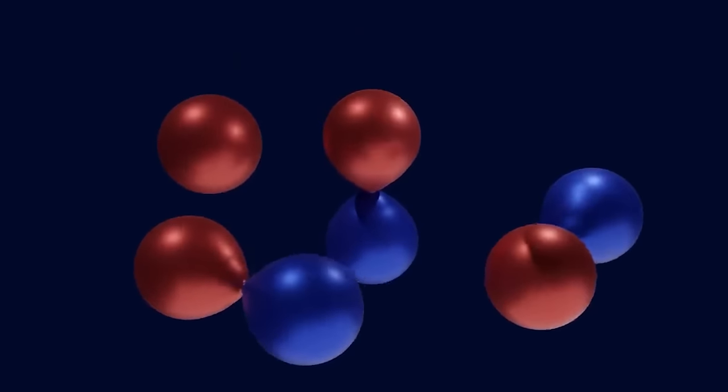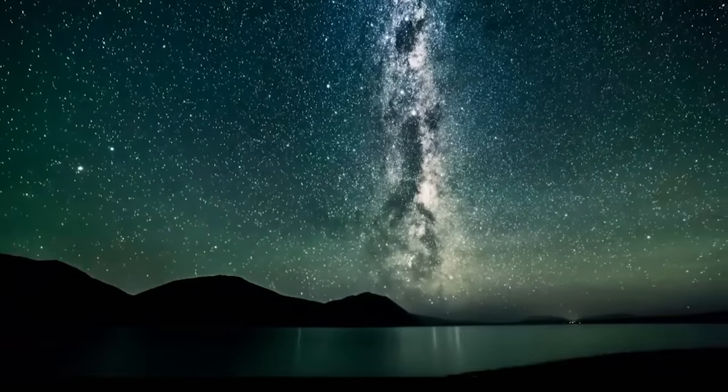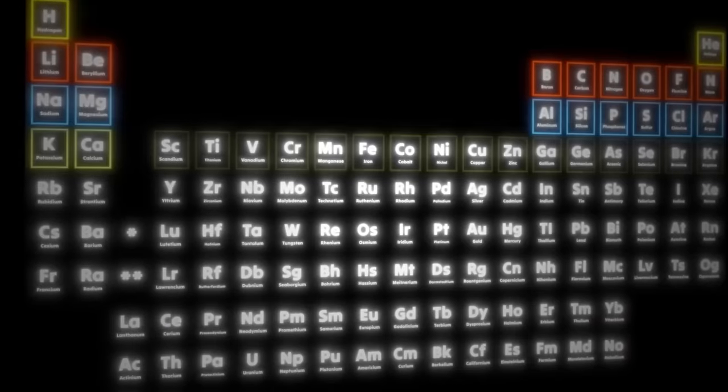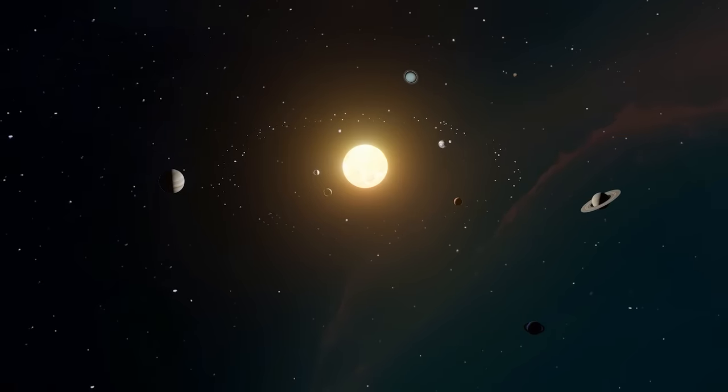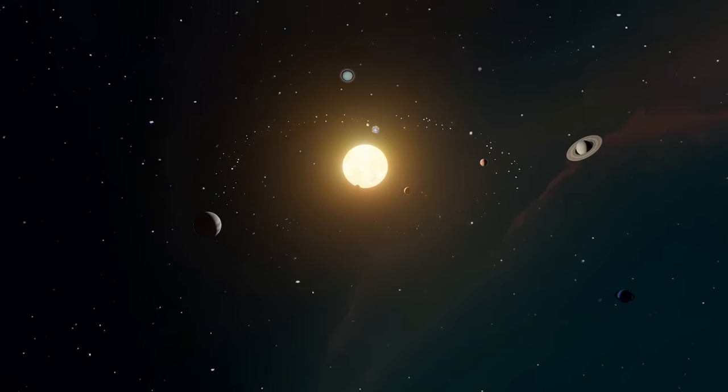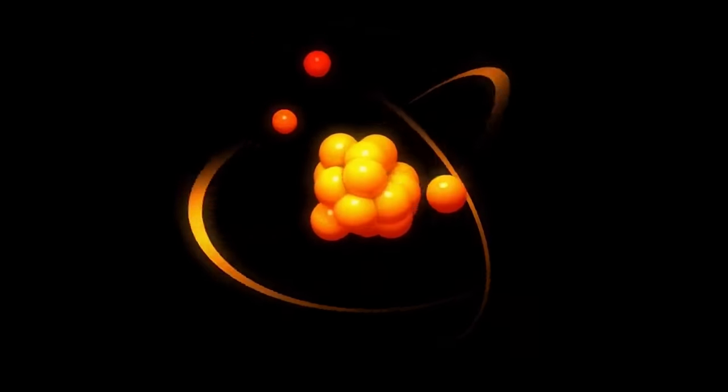Now, delving into the question of why atoms form molecules, it's essential to recognize that the visible universe primarily consists of fewer than 100 naturally occurring elements. However, the remarkable diversity of chemical substances we observe in the cosmos and within living organisms arises from the fact that atoms seldom exist in isolation. Instead, they avidly engage in chemical bonding, combining with other atoms to form molecules.